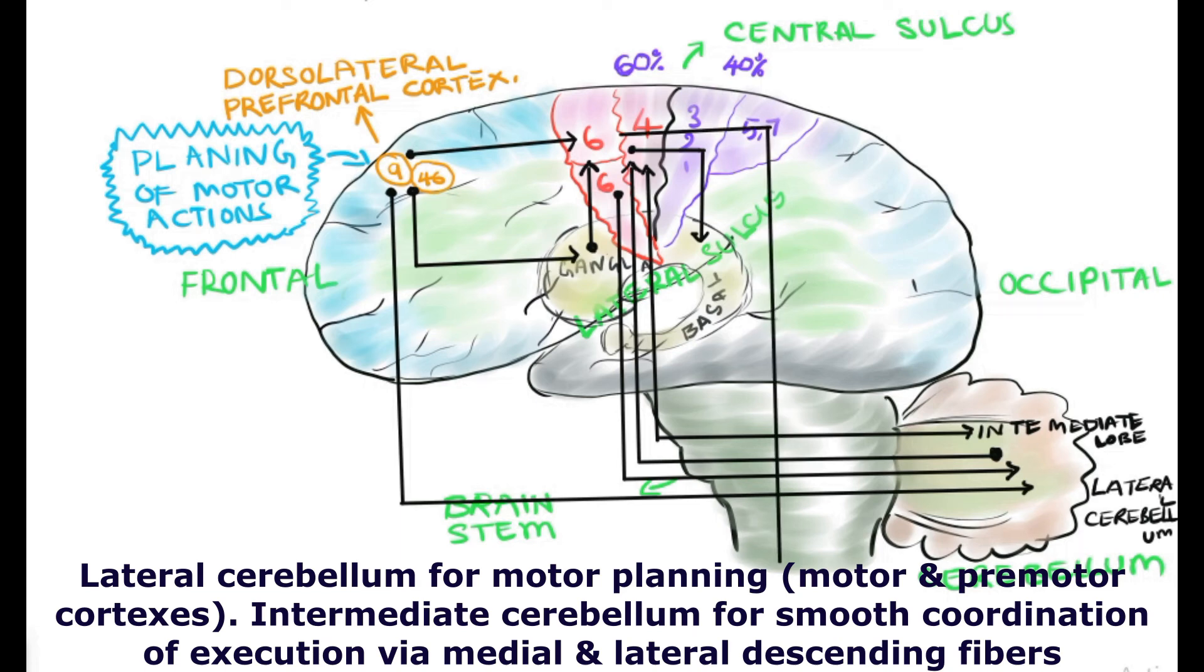However, the main function of the cerebellum is to receive the information from the proprioception from the body as well as receives the copy from the planning area and motor cortex and matches what extent of motor act is required for the muscles. That is how it plans and executes the smooth coordination of the motor function and sends the final copy to the motor cortex.